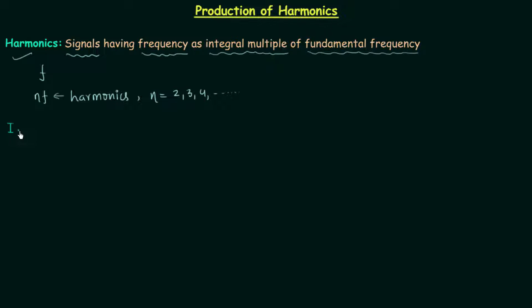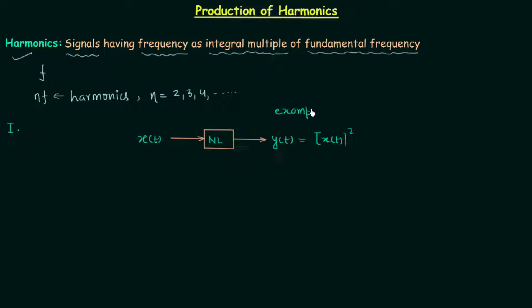In the first case we will consider the non-linear system, and in this non-linear system the output is equal to the square of the input. Let's say the input is x(t) and the output is y(t), so y(t) will be equal to x(t) squared. This is an example of a non-linear system. You can definitely take some other non-linear system to explain whether harmonics are produced in non-linear systems or not.